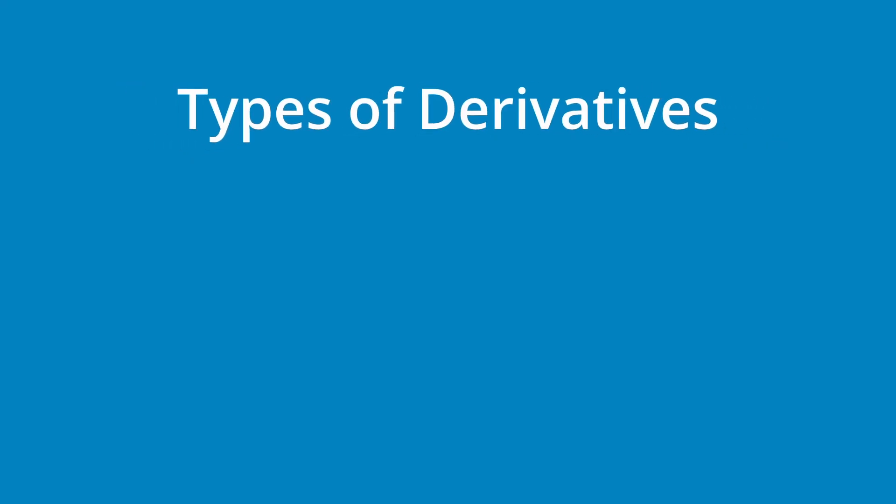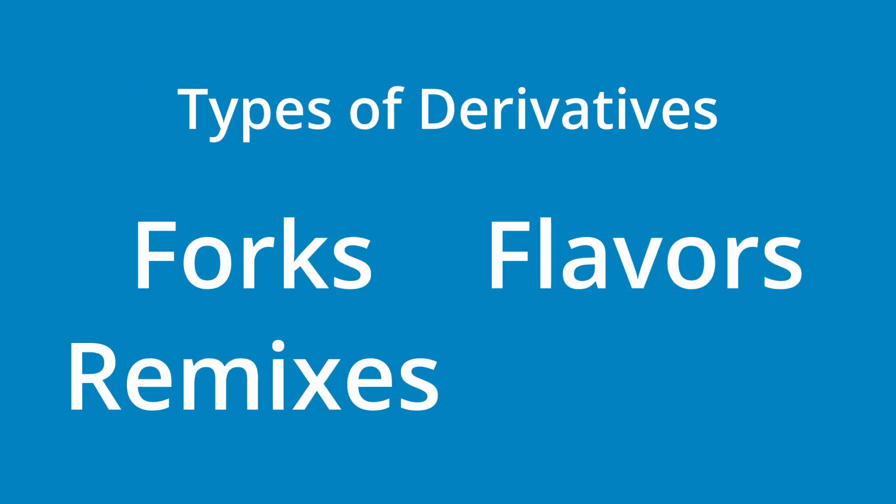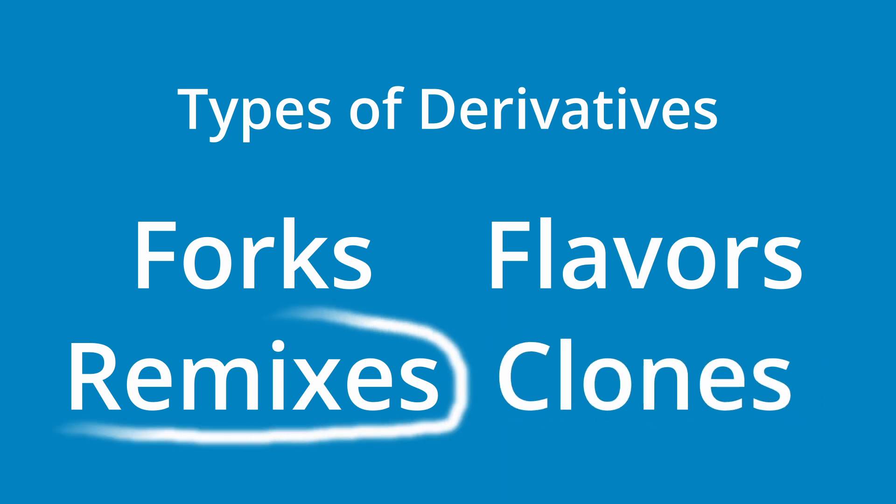There are four main types of derivative distros: forks, flavors, remixes, and clones — with remixes being the type you will encounter the most. Additionally, you may come across other terms such as spin, re-spin, edition, and re-skin, but these are just alternative names for the primary types previously mentioned.